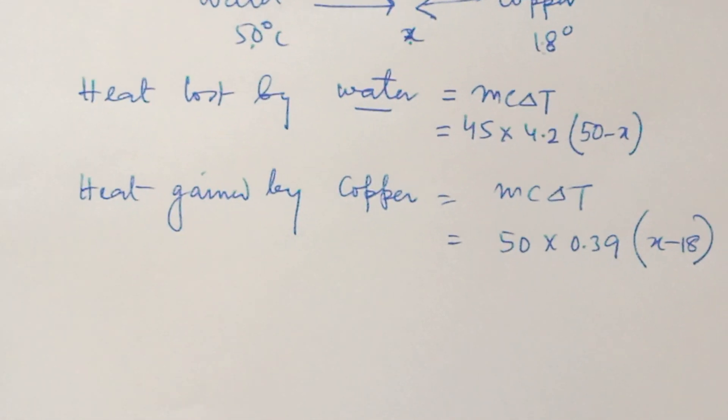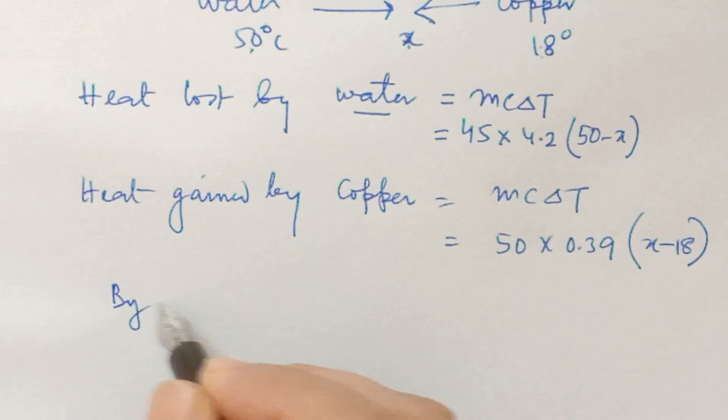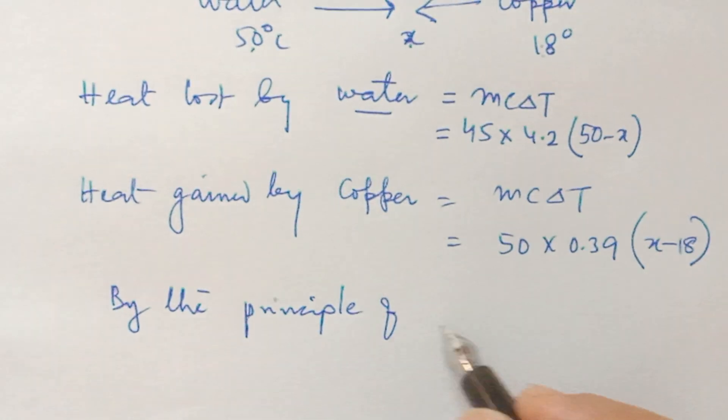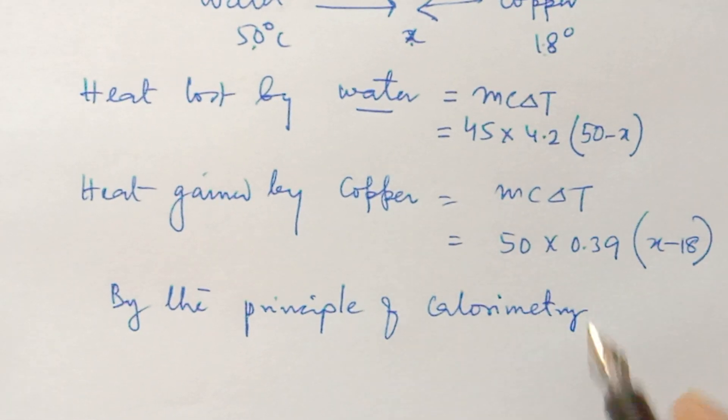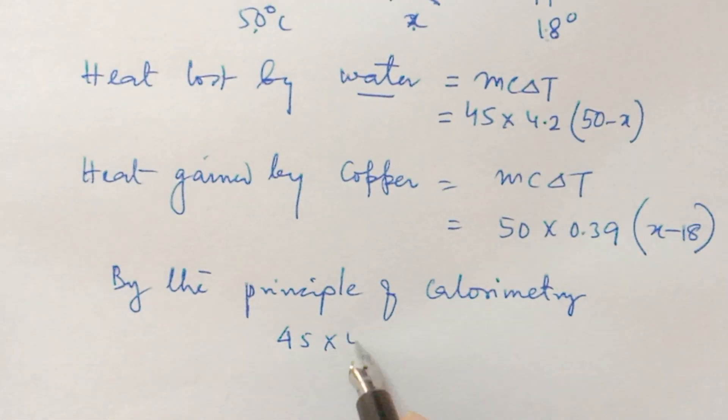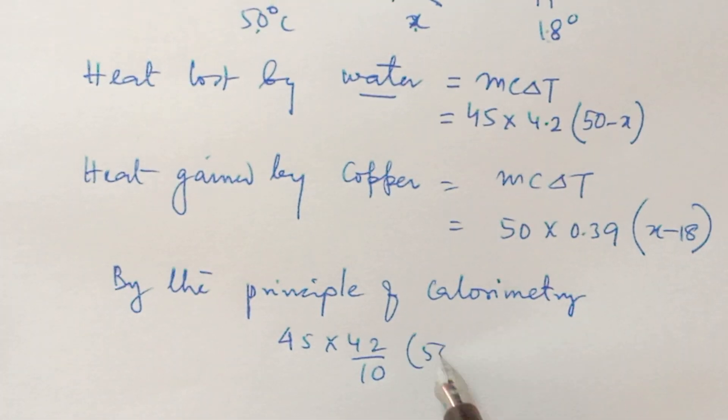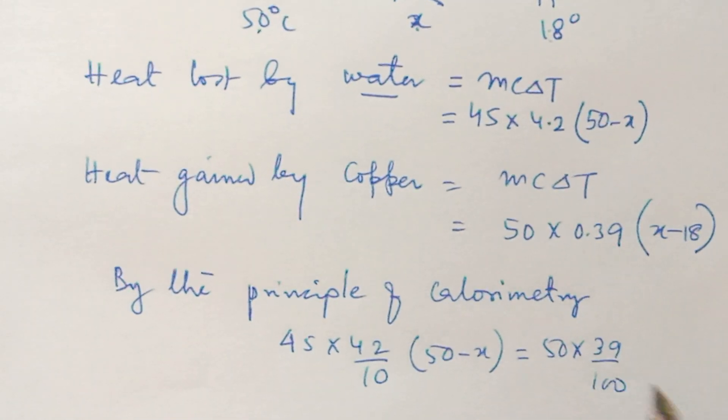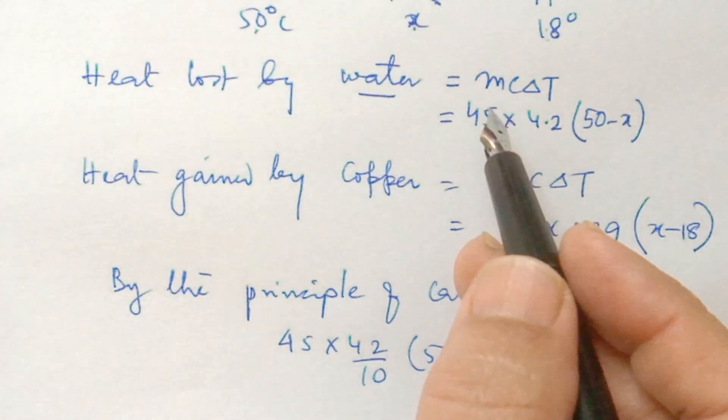By the principle of mixture or principle of calorimetry, heat lost is equal to heat gained. The values are: 45 into 4.2, 50 minus x, equals to 50 into 0.39, x minus 18.